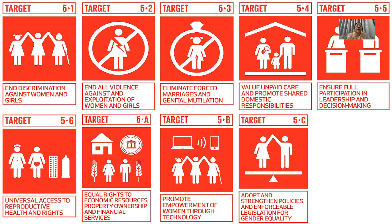SDG 5 has nine targets. First, end discrimination against women and girls. Second, end all violence against and exploitation of women and girls. Third, eliminate forced marriages and genital mutilation. Fourth, value unpaid care and promote shared domestic responsibilities. Fifth, ensure full participation in leadership and decision-making. Sixth, universal access to reproductive health and rights. Then targets 5A, 5B, and 5C: equal rights to economic resources, property ownership and financial services; promote empowerment of women through technology; and adopt and strengthen policies and enforceable legislation for gender equality. We need to achieve these nine targets to achieve SDG 5.